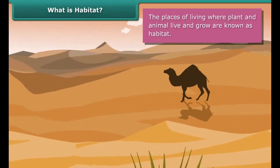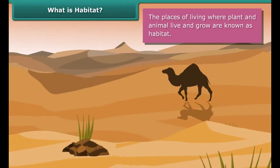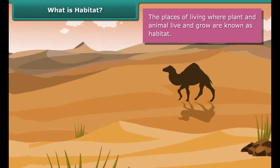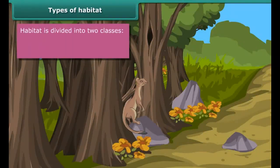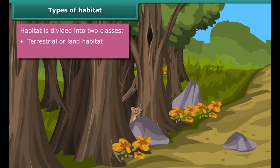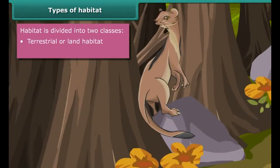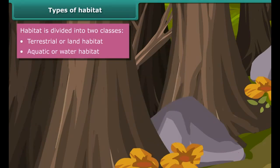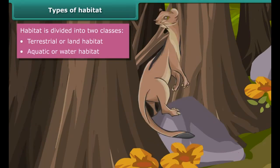We all know that every organism requires some place where its basic necessities like food, water, and shelter should be met. This place of living where plants and animals live and grow is known as habitat. All living organisms should adapt themselves to their habitat to thrive and survive in their surroundings.